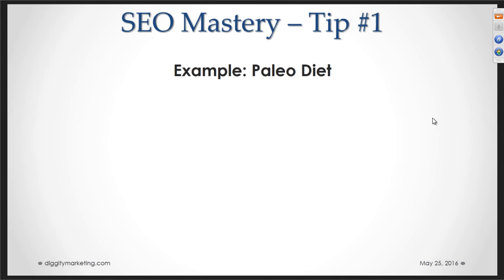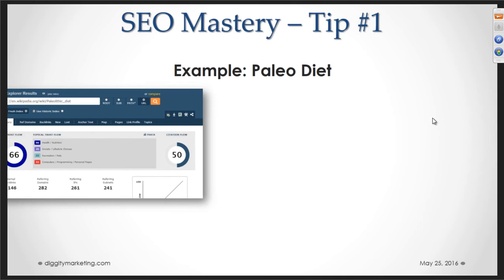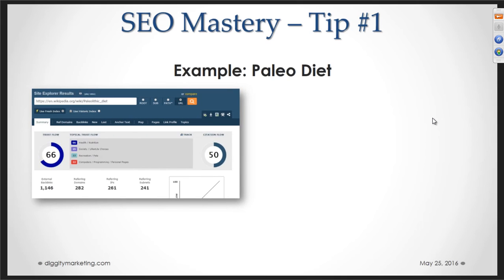For example, the paleo diet — everyone's probably heard about it. If I take the paleo diet's Wikipedia page and toss it into Majestic, I see it has 282 referring domains. And I start to take a look — here's a PBN that is pointing to the paleo diet called dbsatin.com.